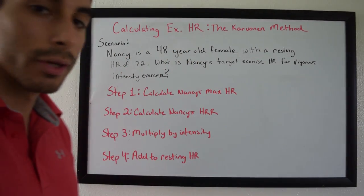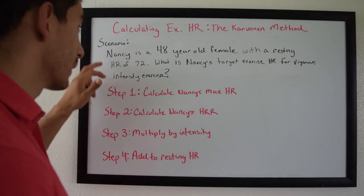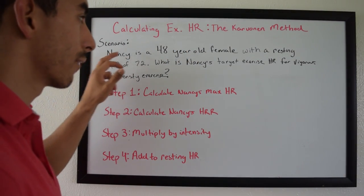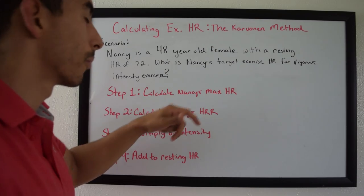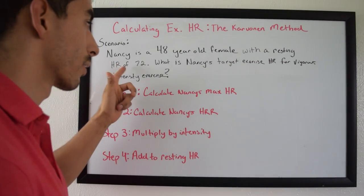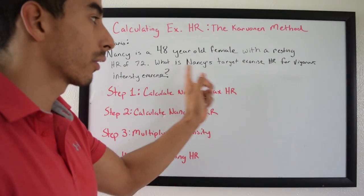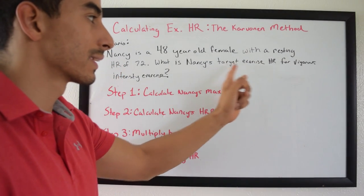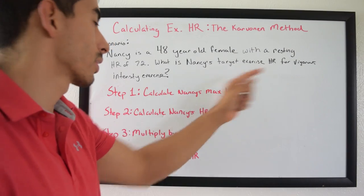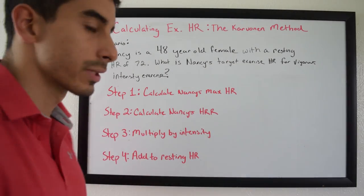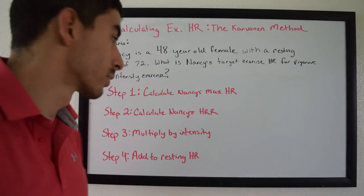So the scenario here is Nancy. Nancy is a 48-year-old female with a resting heart rate of 72. We need to calculate what Nancy's target exercise heart rate is for vigorous intensity exercise.